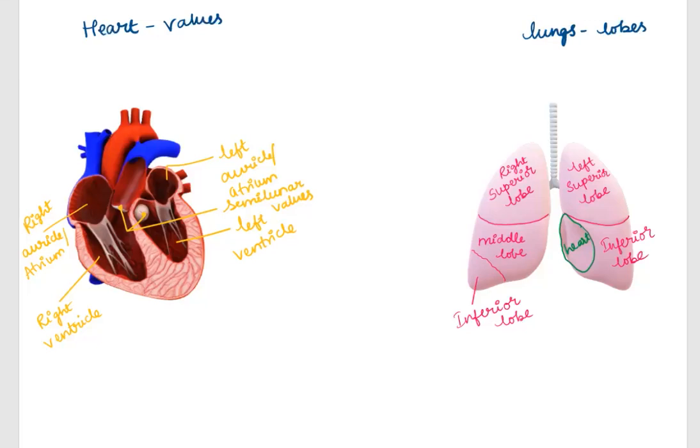Here we are going to discuss how to remember the position of bicuspid and tricuspid valves in the heart and the number of lobes in the lung.